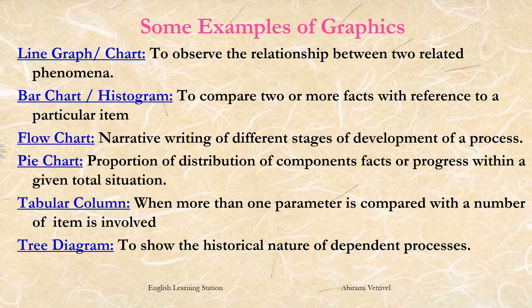The next type of graphical representation is the table or tabular column. When one or more than one parameter is to be compared with a number of items, then tables or tabular columns are preferred. Finally, the last type of graphical representation is the tree diagram, which is used to show the historical nature of dependent processes.